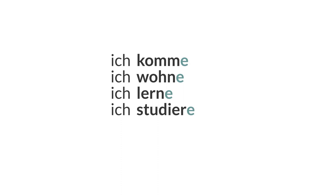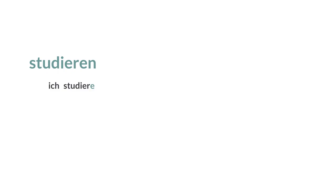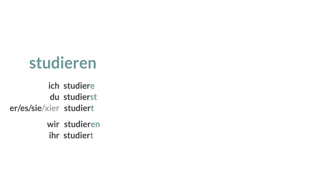Let's look at all the endings for the verb studieren: ich studiere, du studierst, er, es, sie, xie studiert, wir studieren, ihr studiert, sie studieren. Most verbs work like this. The endings are: -e for ich, -st for du, -t for er/es/sie/xie, -en for wir, -t for ihr, and -en for sie plural and sie formal.